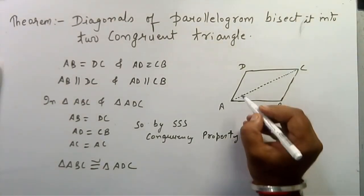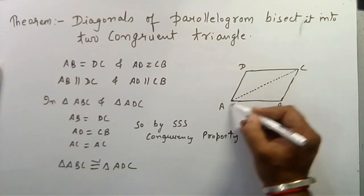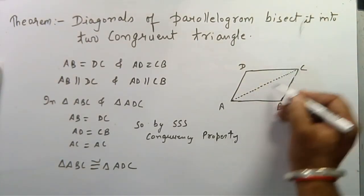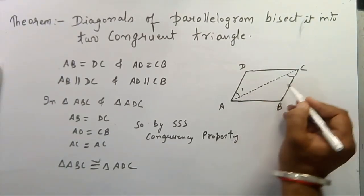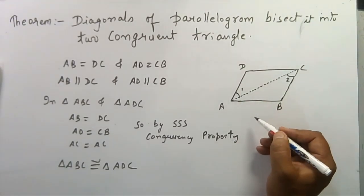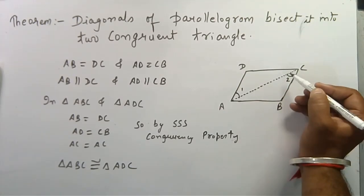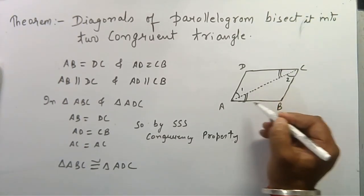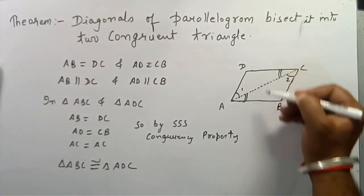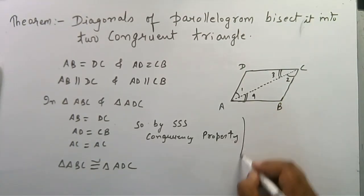Now another way for proving this: these two lines are parallel and AD acts as a transversal. So angle 1 equals angle 2. Also, this angle equals this angle because DC and AB are parallel. So another way